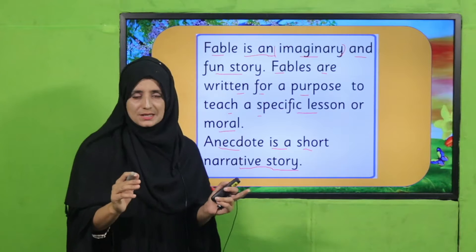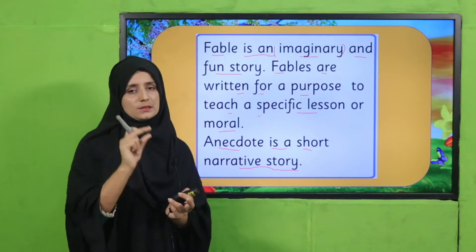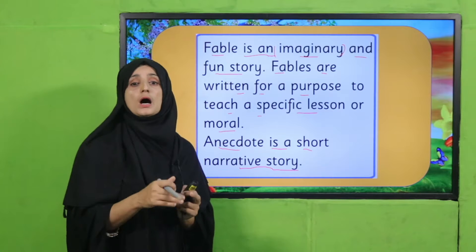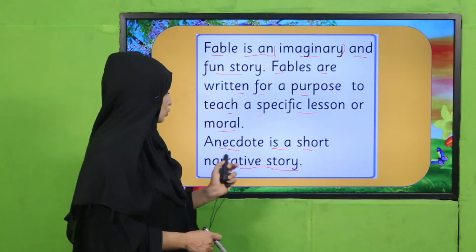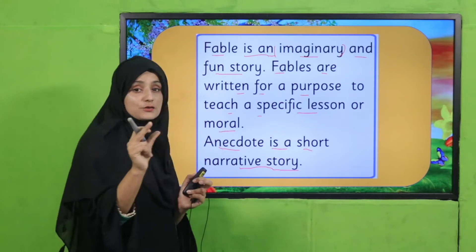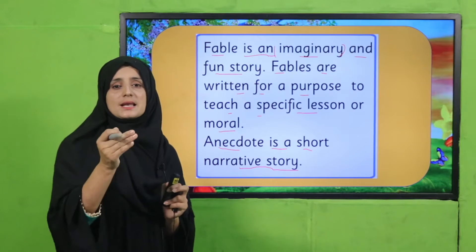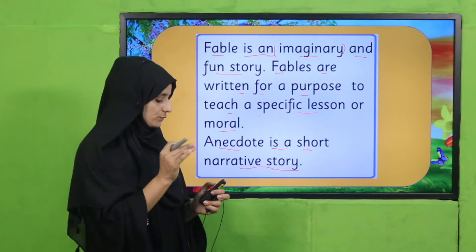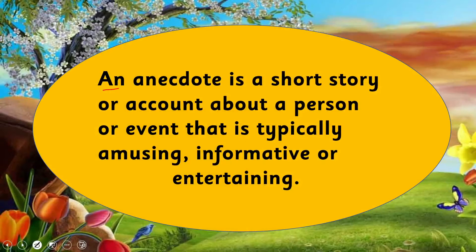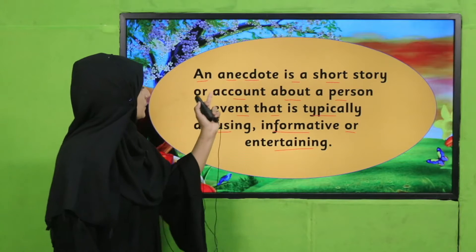Both fables and anecdotes are types of stories, but these stories have a lesson at the end — we get a lesson about how to live our life. An anecdote is a short narrative story. Narrative means that we tell something about other people or events. An anecdote is a short account about a person or event that is typically amusing, informative, or entertaining.